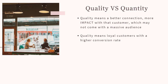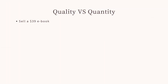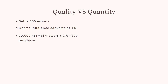Quality means loyal customers, and loyal customers come with a higher conversion rate. So let's do some math. Let's say you're wanting to sell a $39 e-book. A normal audience converts at 1%. So let's say you have 10,000 normal viewers — 10,000 people that your product has reached — they convert at 1% and you make 100 purchases.